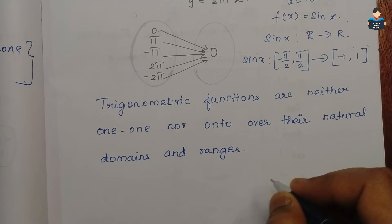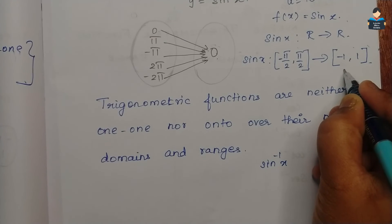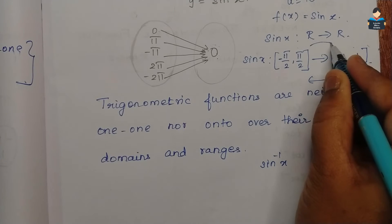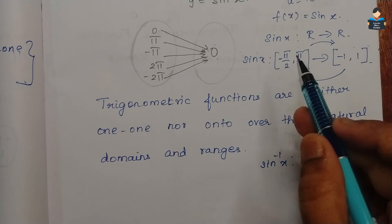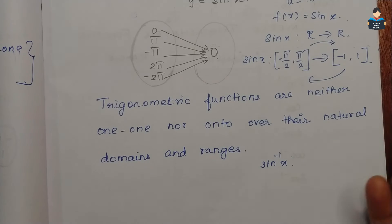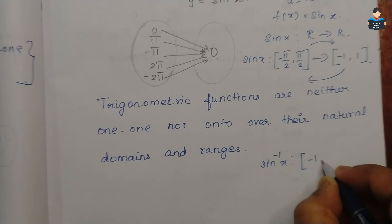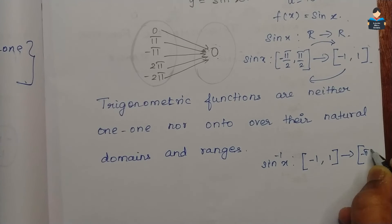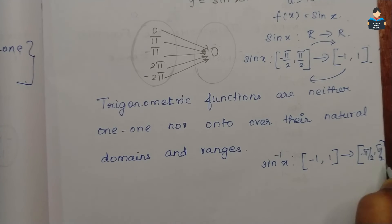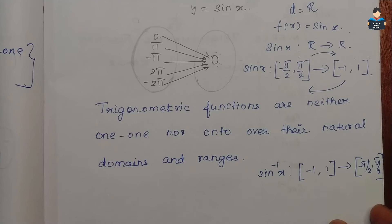Now, sin inverse of x. For sin inverse of x, if we look at the domain and range: the domain of sin inverse is the closed interval minus 1 to 1, and the range of sin inverse is minus pi by 2 to pi by 2. This is the sin inverse domain and range.